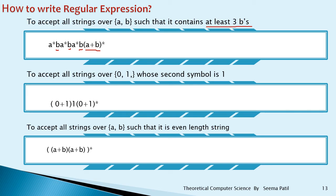To accept all strings over {0, 1} whose second symbol is 1: write 1 at the second position. Before it there can be either 0 or 1, so write (0 + 1). After that second symbol 1, there can be any number of 0s and 1s, so write (0 + 1)*. The regular expression is (0 + 1)1(0 + 1)*.